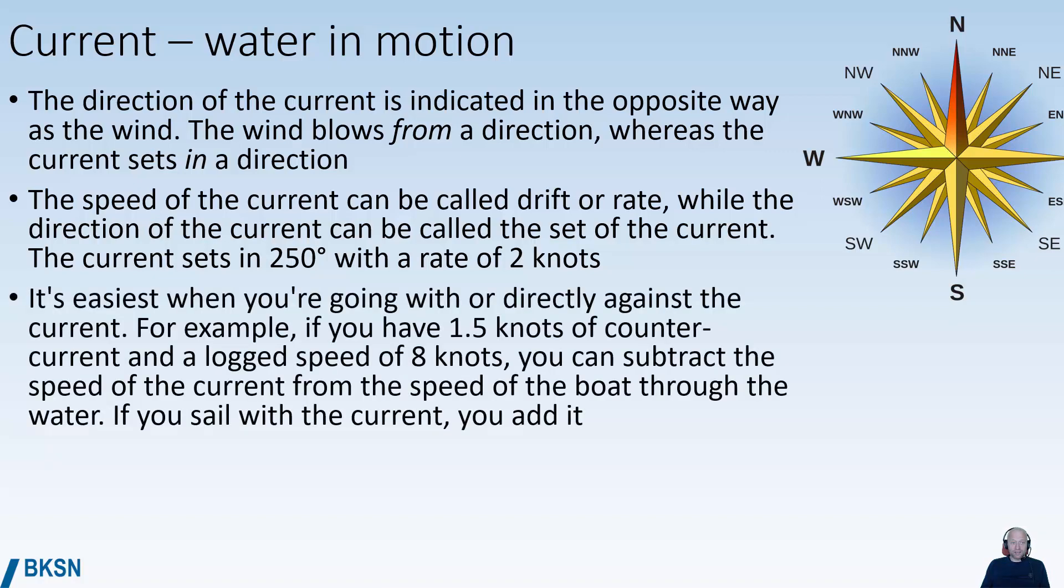This is easiest to take account of if you're going with or directly against the current. For example, if you have 1.5 knots of counter current and a logged speed of 8 knots, you just subtract the speed of the current from your speed through the water. You'd be ending up with a speed over ground of 6.5 knots in this case, whereas if you have the current going in the same direction as you, you just add it. In this case you would then have 9.5 knots speed over ground.